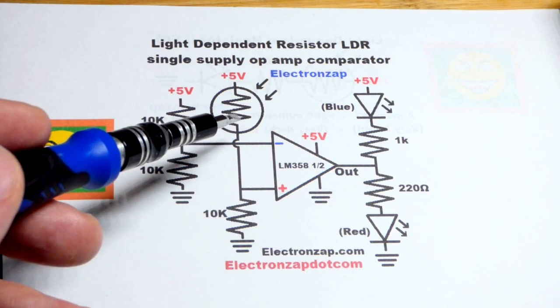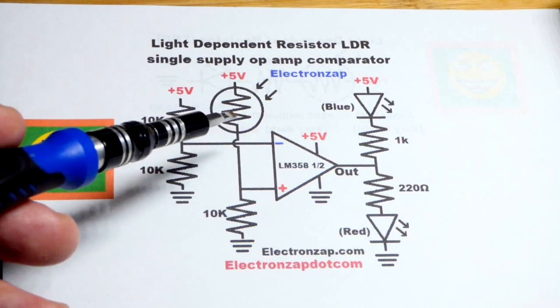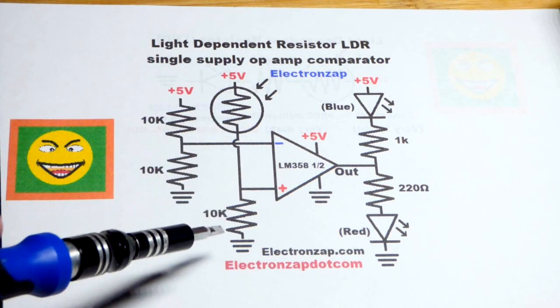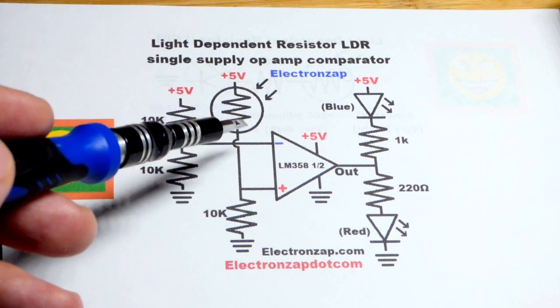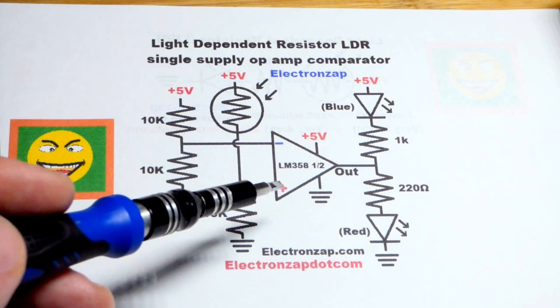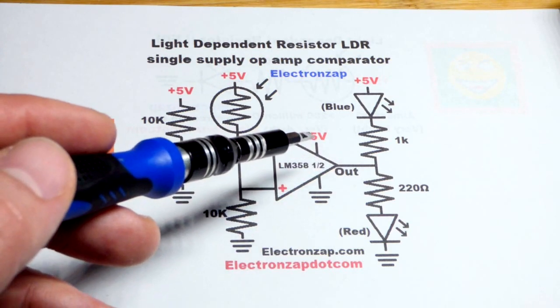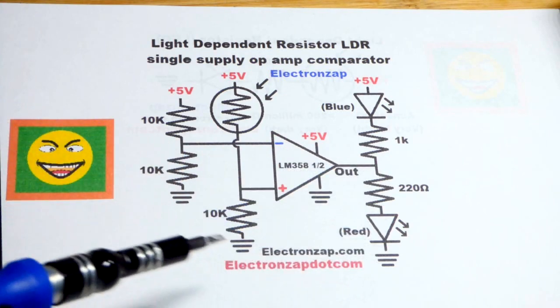When enough light is falling on the light-dependent resistor, the resistance is going to be well below 10 kilo-ohms. There's going to be less resistance on the positive side. We're going to have a higher voltage than at 2.5 volts, and the output will be high. It doesn't connect directly to the 5-volt supply, but somewhat close. Red LED will be on.